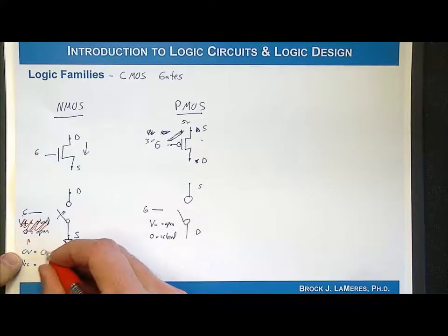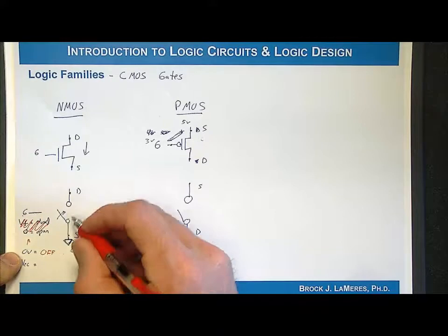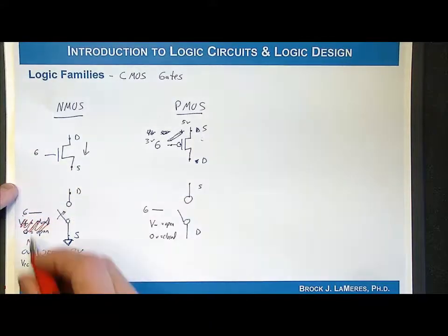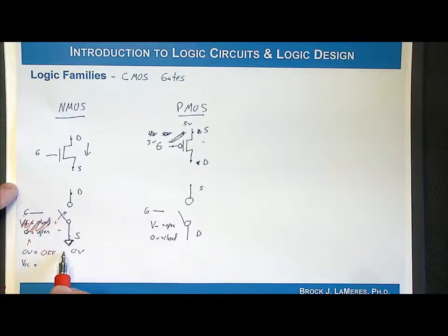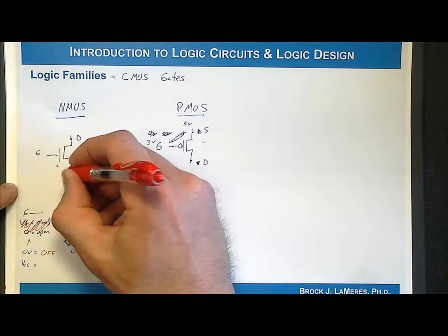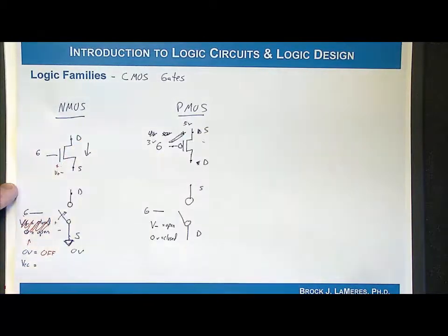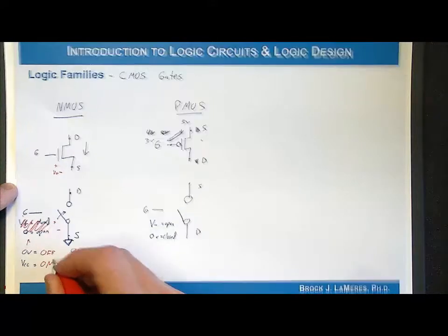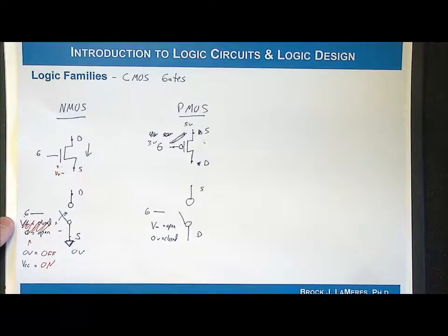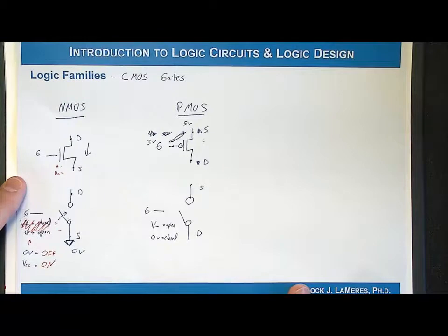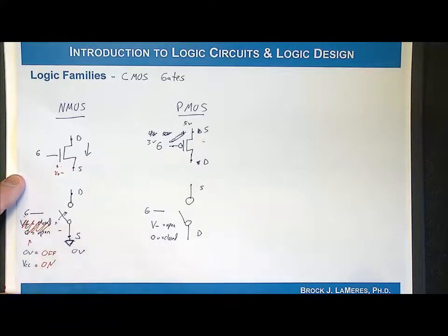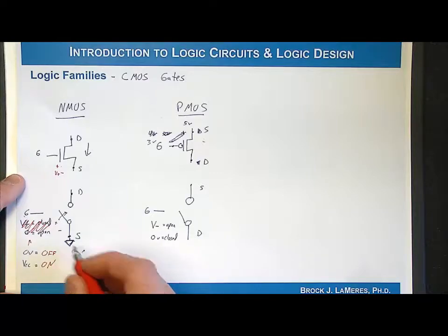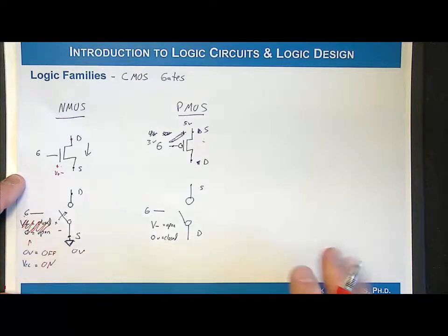But if I put VCC on the gate, I have a voltage potential greater than the threshold voltage, which is required to turn this on — so this is now going to be on. We're able to do that since voltage is always measured with respect to two points. The lowest point is the source, and we tie that to ground or 0 volts in CMOS, and everything relative to the gate is referenced to that.